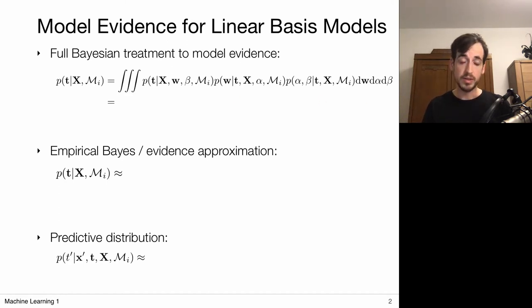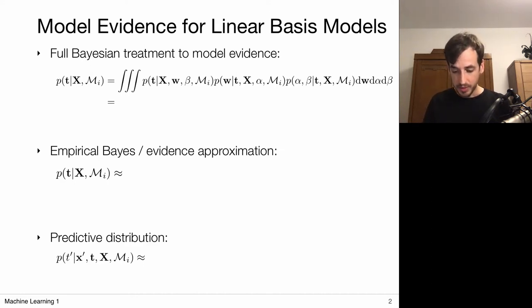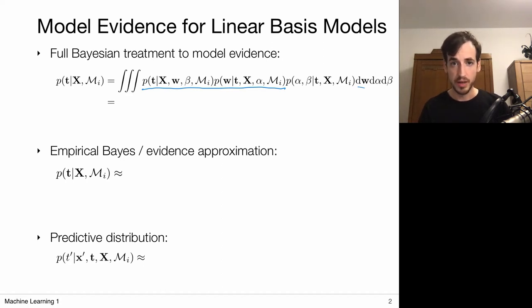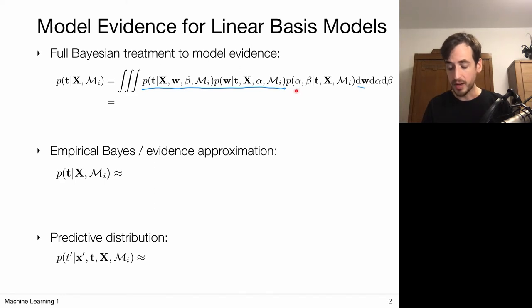Ideally we do want to stick with this Bayesian framework because we like it. So what we're going to do is make some approximations. The marginalization over W is something we did before, and when we work with Gaussian distributions this was tractable and resulted in a new Gaussian distribution. But if we want to include integration over other types of priors, which are typically very wide, we do not know much about our hyperparameters in advance, and these integrals really become intractable.